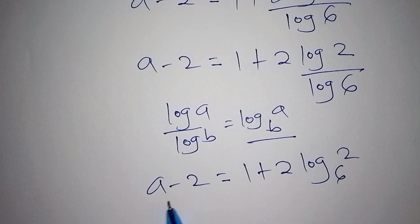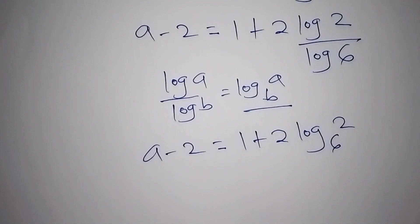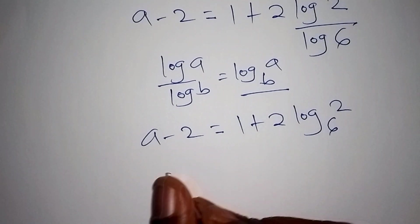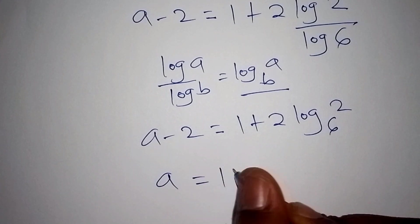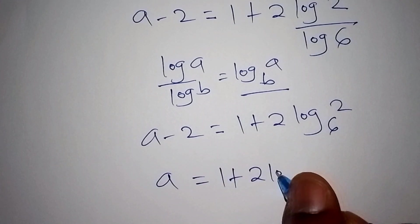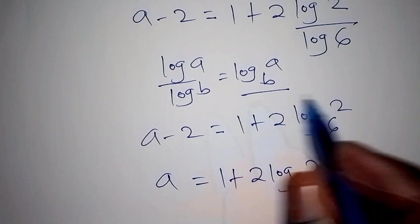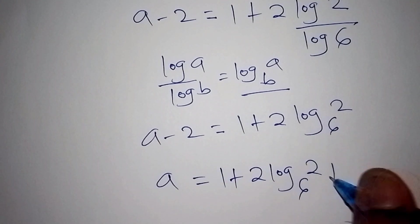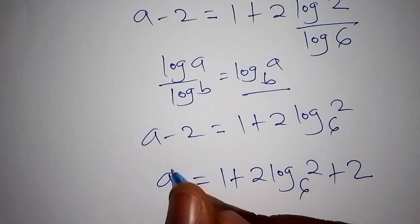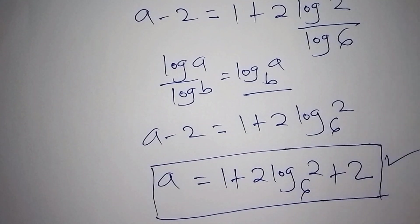Now I want to remove the minus 2 from this side so that we remain with a. When minus 2 crosses the equal sign it becomes plus 2. So our value for a is equals to 1 plus 2·log₆2 plus 2, which gives a equals 3 plus 2·log₆2.